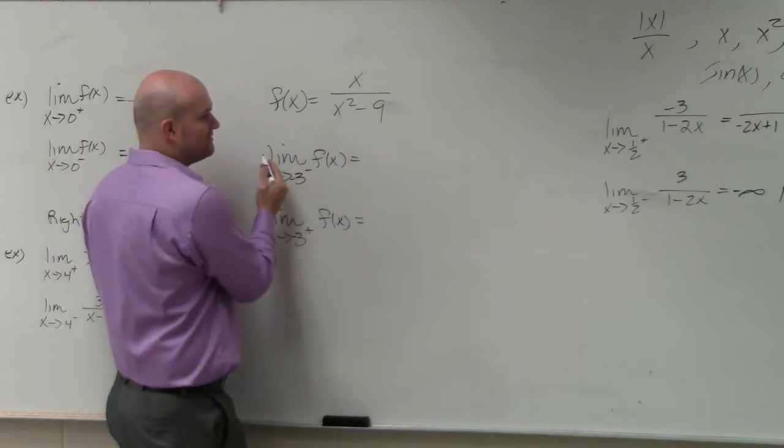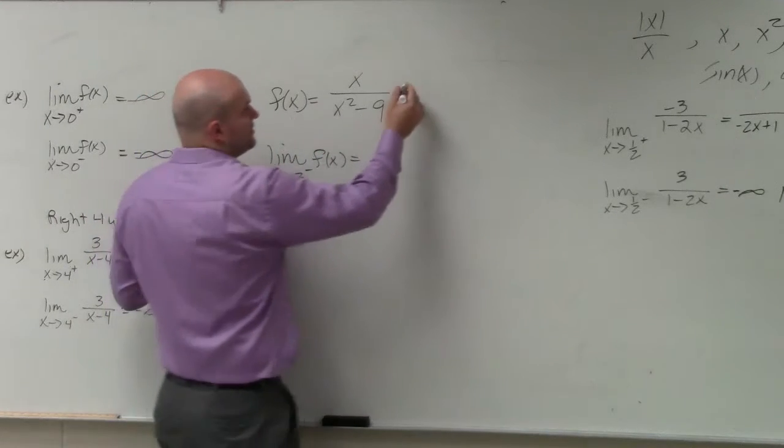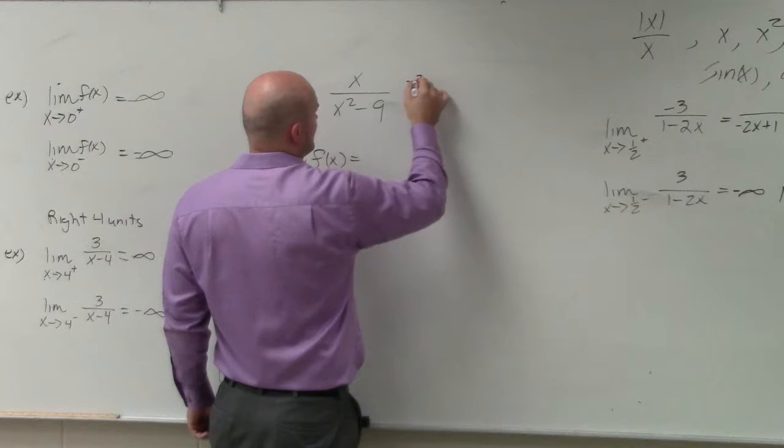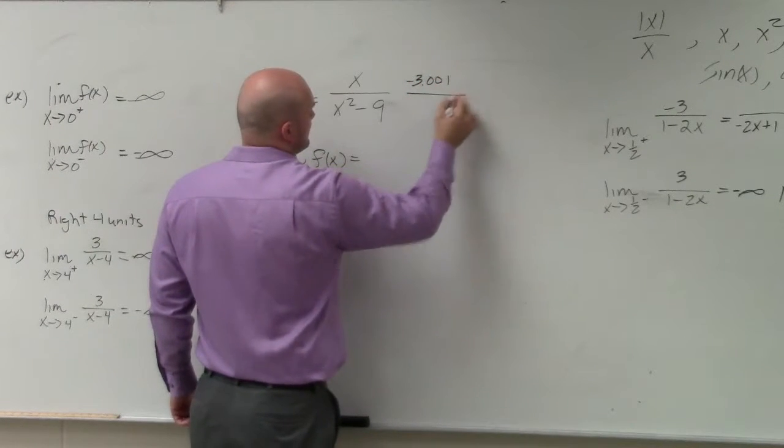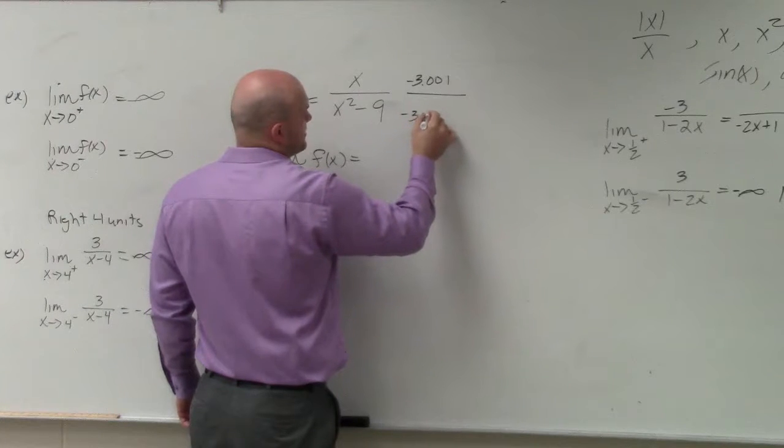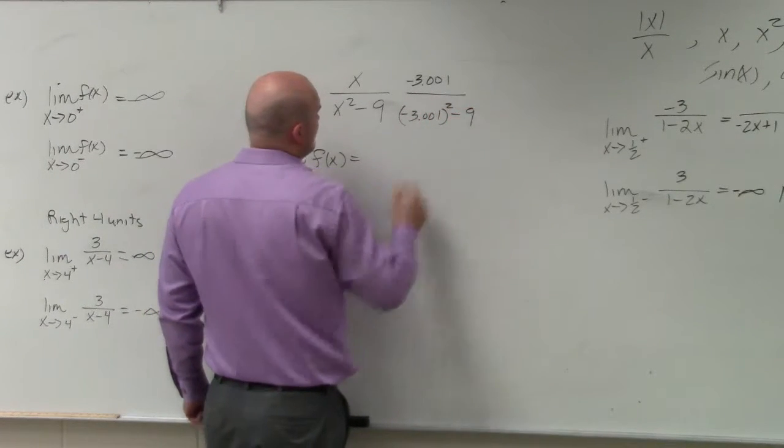So from the left-hand side, we need to pick a value that's more negative than negative 3. So if I plugged in negative 3.001, and then negative 3.001 squared minus 9.